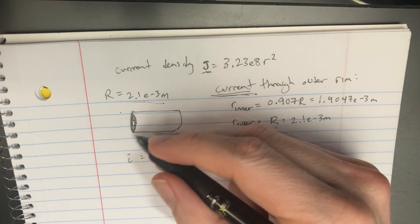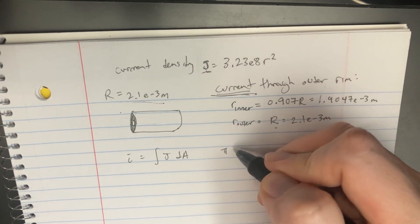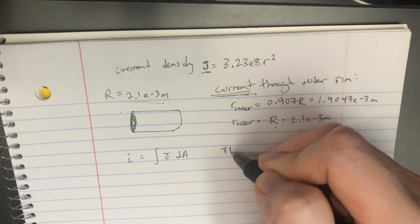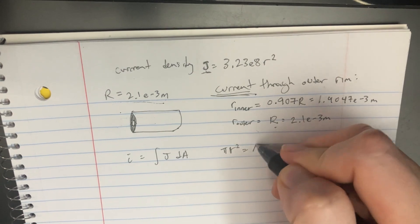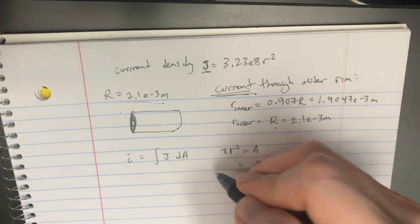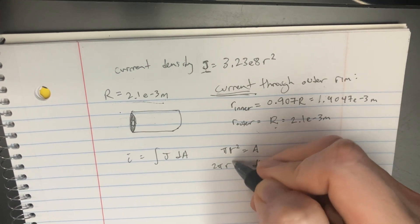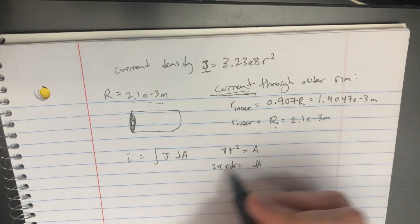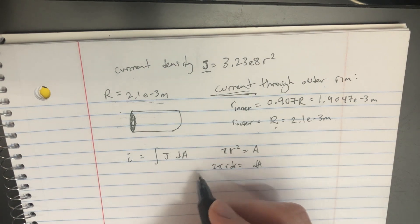We know that the area of a circle is πr². That's A. But dA is going to equal 2πr dr - we're just taking the derivative. We're going to plug that in.